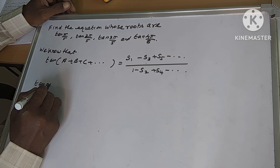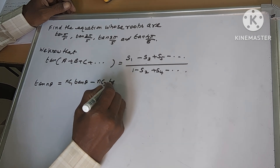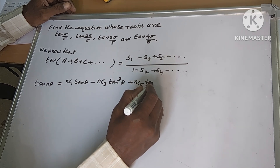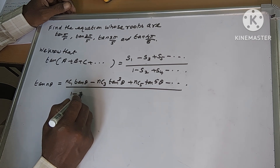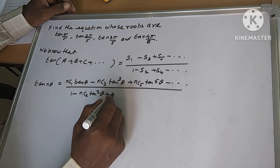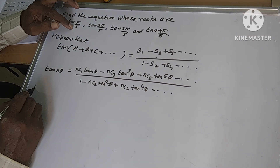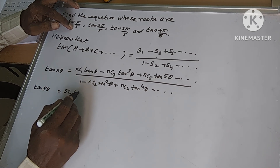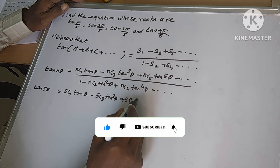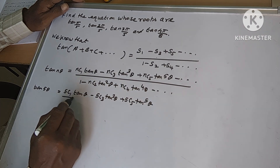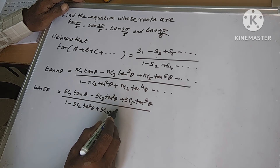So now, tan(nθ) equals nC1·tan θ minus nC3·tan³θ plus nC5·tan⁵θ, and so on. Here n is 5, so tan(5θ) equals 5C1·tan θ minus 5C3·tan³θ plus 5C5·tan⁵θ, divided by 1 minus 5C2·tan²θ plus 5C4·tan⁴θ.